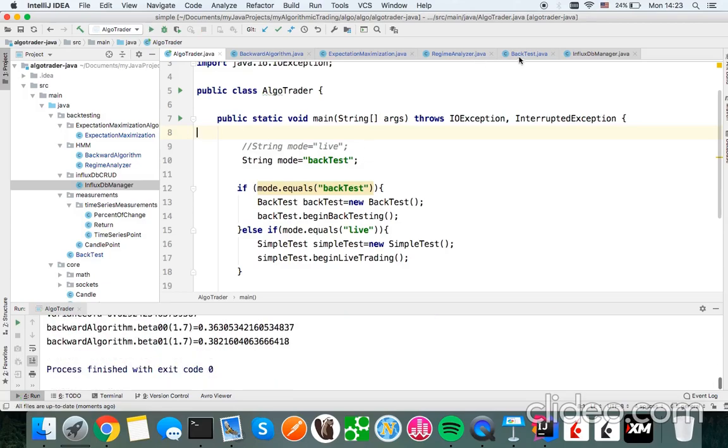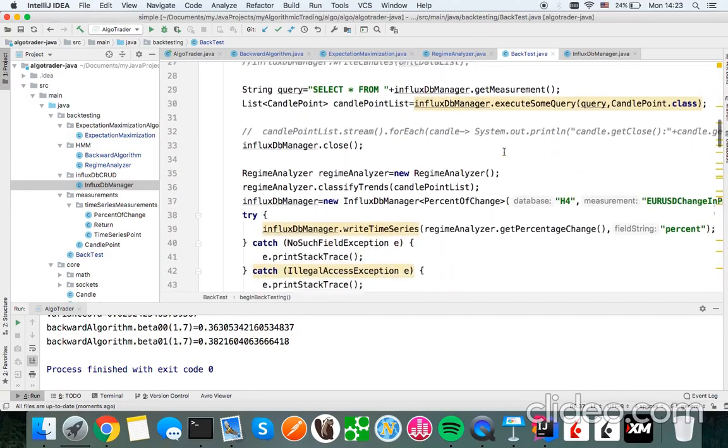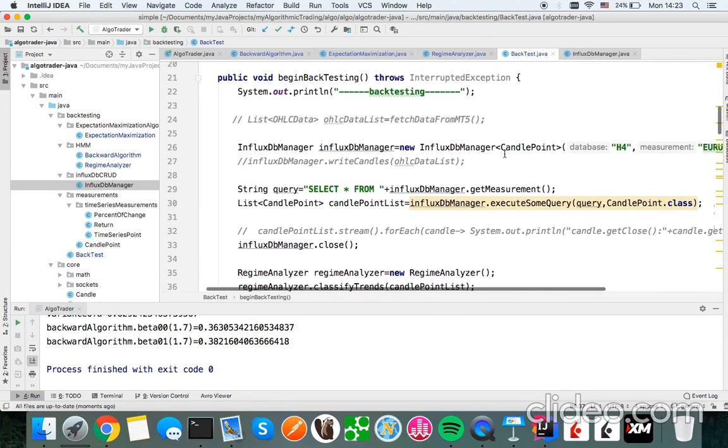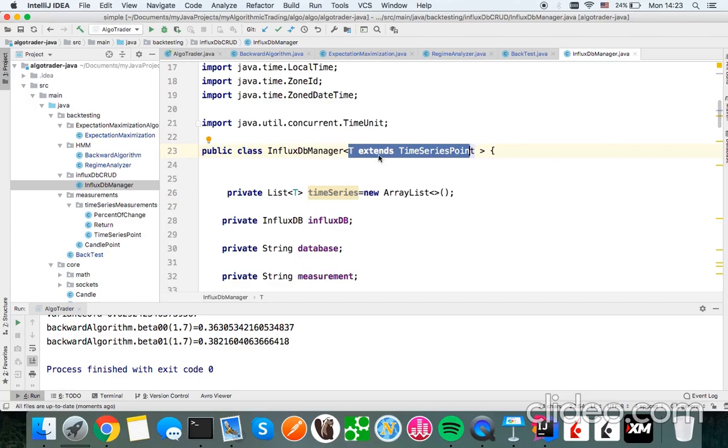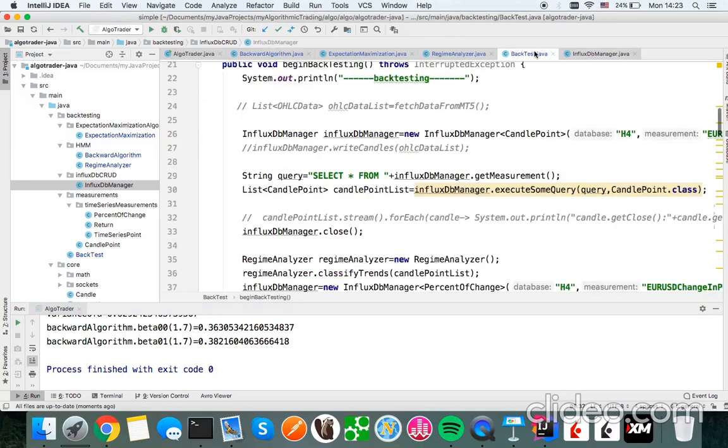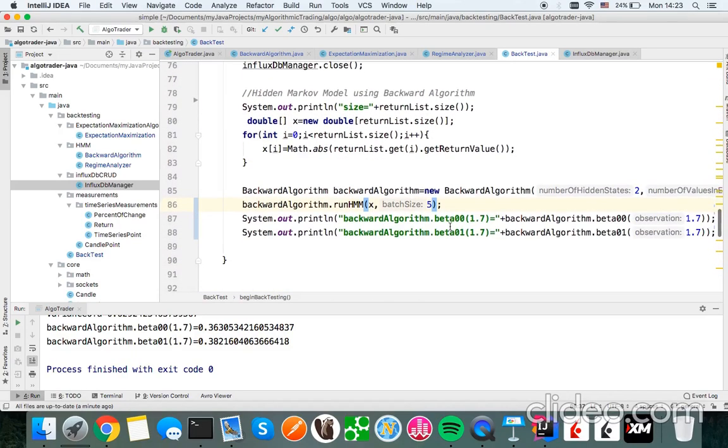In backtest mode I calculate these regime changes. I use influx DB, a very good time series database, and I use generics because I love loose coupling. After getting those returns, we pass it to backward algorithm using a batch size of 5.